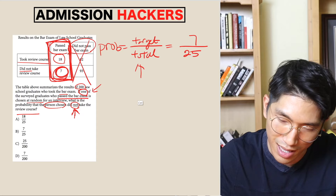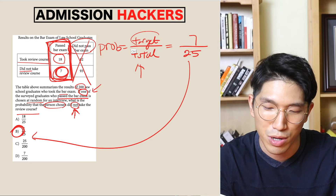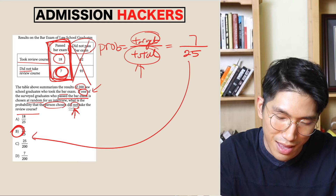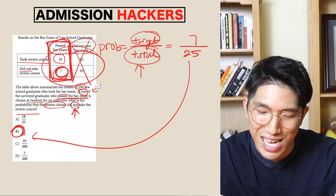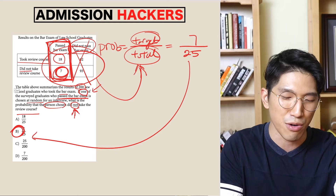Our answer is going to be choice B. These probability questions are really not that hard. Most people end up missing them because they incorrectly identify the target and the total. The most common mistake is that people consider everyone in the table instead of only those who passed the bar exam, which screws them over. So whenever you see a probability question, take a deep breath, be calm, and read the question slowly — and you'll be able to get them right.